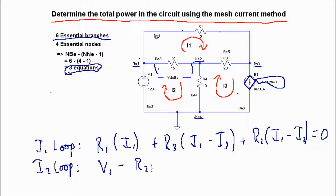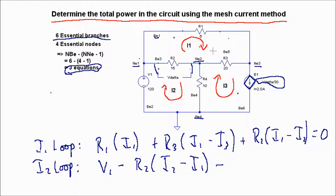The next one is the I2 loop. We start at V1 — remember, we're using KVL, Kirchhoff's voltage law, going around this loop and all voltages should add to zero. Minus R2 times (I2 minus I1) since we're going from positive to negative in the direction of current flow, minus R4 times (I2 minus I3), and that all adds up to zero.